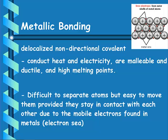Metallic bonding occurs in metals, which is another type of atomic solid. In metallic bonding, we have delocalized, non-directional covalent bonding — our electrons aren't tied to one atom; they're moving around in a sea of electrons between the metal ions. This allows metals to conduct heat and electricity, and makes them malleable, ductile, and gives them high melting points. It's difficult to separate the atoms, but easy to move them around because they stay in contact through the mobile sea of electrons.